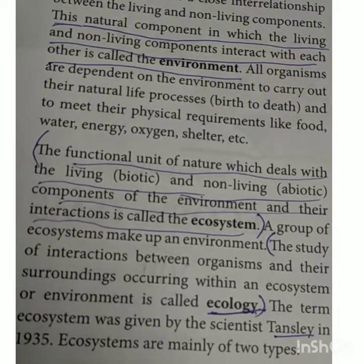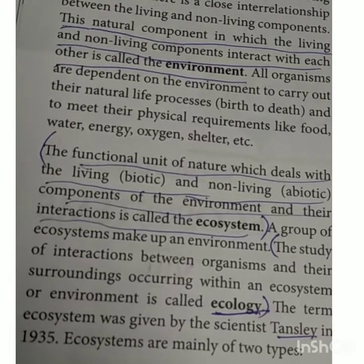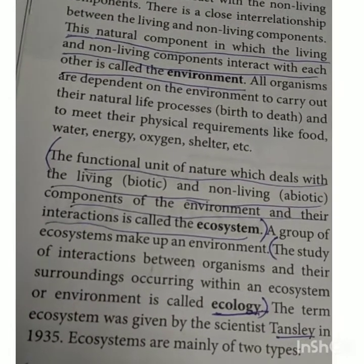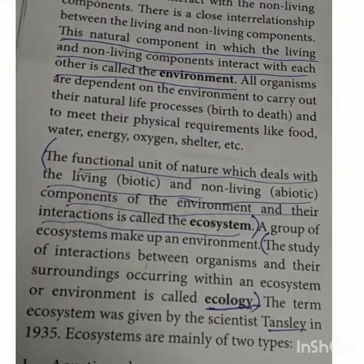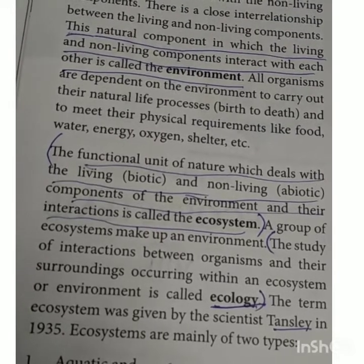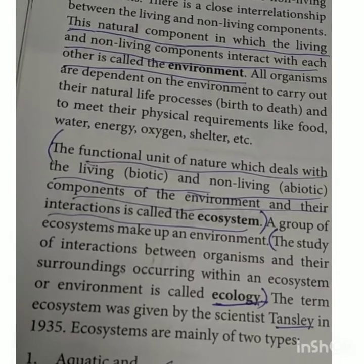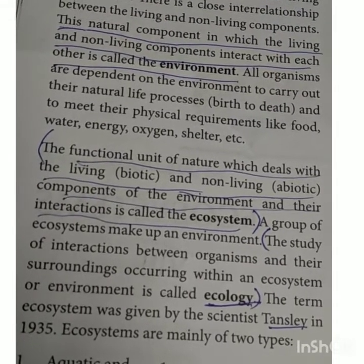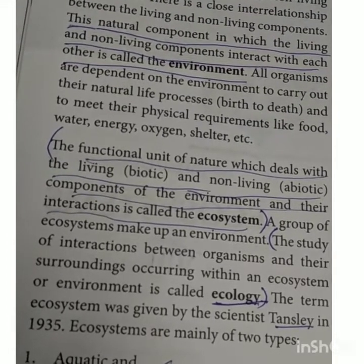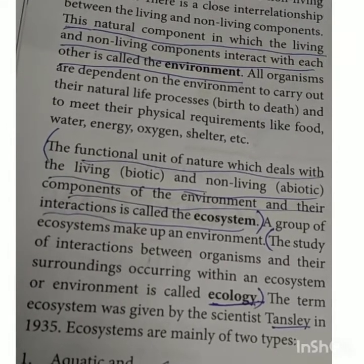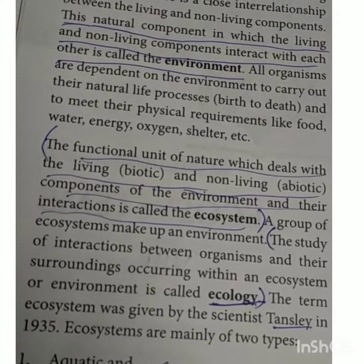A group of ecosystems makes up the environment. For example, if there is a pond nearby, and in that pond different kinds of fish and plants are present, then that pond is an ecosystem. Similarly, a forest where different kinds of animals and plants live together is called a forest ecosystem. The temperature, water, air, soil, and different kinds of plants that depend on each other — for example, plants that grow vegetables and fruits provide food for animals — so animals depend on plants for their food. This interaction between plants and animals in a particular ecosystem is an example of an ecosystem.